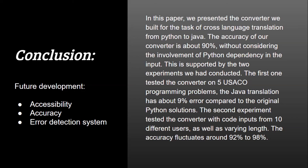This is supported by the two experiments we conducted. The first used the converter on five USACO programming problems, and the Java translations had about a 9% error rate compared to the original Python solutions. The second experiment tested the converter on code inputs from 10 different users with varying lengths, and the accuracy fluctuated from 92% to 98%.